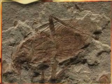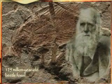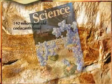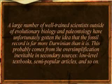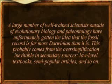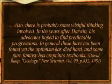Whenever the fossil record is mentioned, most people mistakenly assume that there is a positive relationship between the record and Darwin's theory. However, an article in New Scientist by David Raup, a professor of geology from Harvard, Rochester, and Chicago universities, refers specifically to this error: 'A large number of well-trained scientists outside of evolutionary biology and paleontology have unfortunately gotten the idea that the fossil record is far more Darwinian than it is. This probably comes from the oversimplification inevitable in secondary sources, low-level textbooks, semi-popular articles, and so on. Also, there is probably some wishful thinking involved.'